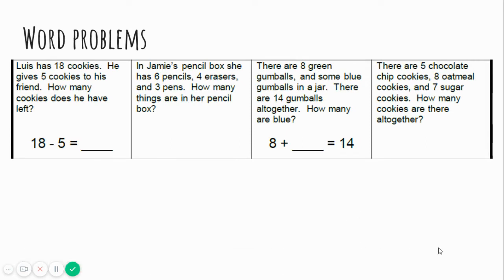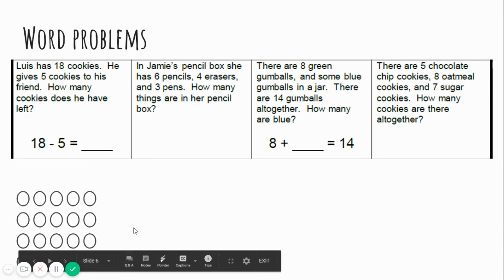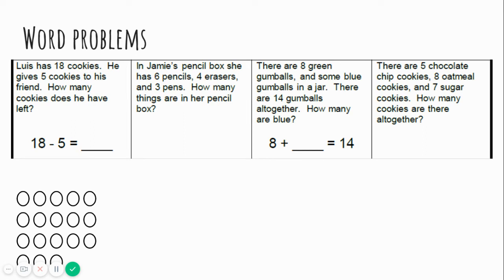Let's look at word problems. The name is Luis. Luis has eighteen cookies. He gives five cookies to his friend. How many cookies does he have left? So Luis has eighteen cookies. He gives five cookies to his friend. How many cookies does he have left? Let's count them. We can count those by fives because those are like five group rows. Five, ten. Then we have three. Ten, three is what number? Thirteen. Awesome.